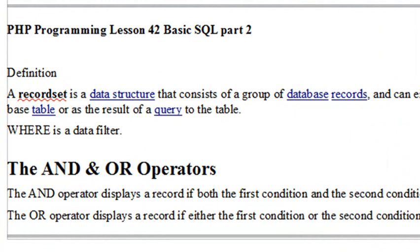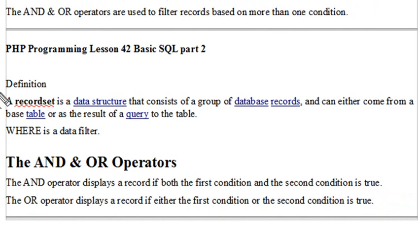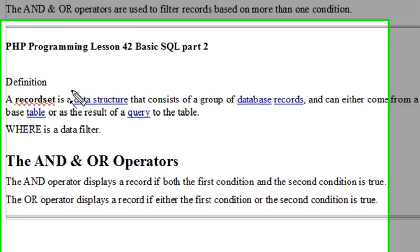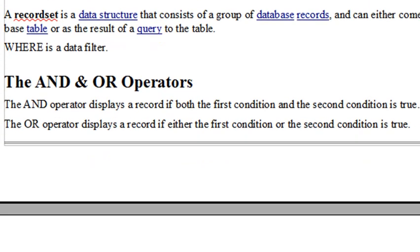We mentioned something that you had not talked about before, and that is a record set. A record set is a data structure that consists of a group of database records that can either come from a base table or as a result of a query to the table — basically just the results of our query. We're going to complete what we started in the first lesson on SQL and start with the logical operators AND and OR. You've already seen logical operators in PHP, and they work pretty much the same in SQL.